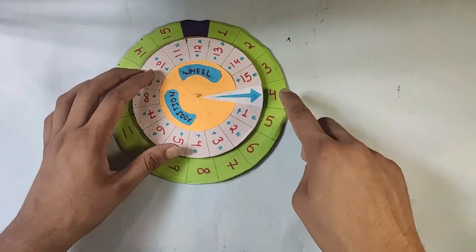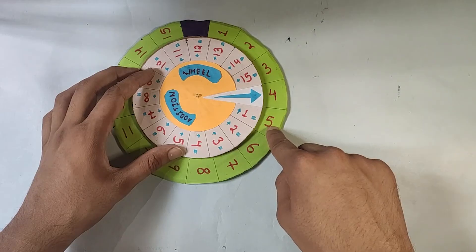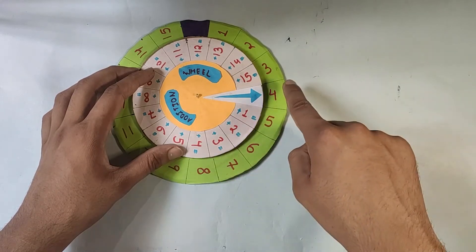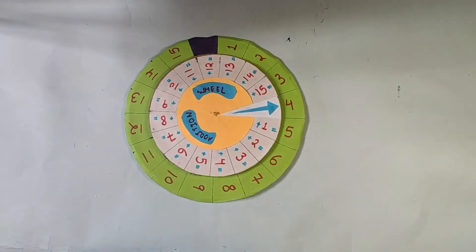Now it is 4 plus 1 equals 5, 4 plus 3 equals 7, 4 plus 4 equals 8. So you understand how we can use this wheel to do the addition part.